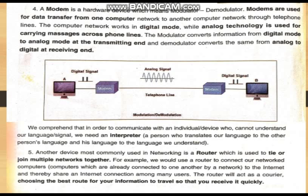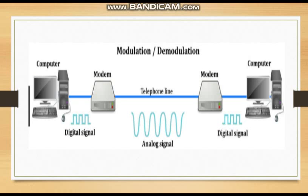Another most important device necessary for forming a network is a modem. A modem is a hardware device — the word modem means modulation and demodulation. Modems are used for data transfer from one computer network to another through telephone lines. Computers can understand only digital signals, but data transfers through telephone lines in the form of analog signals. So the modem plays the role of converting digital signals into analog signals and then analog signals back into digital signals.